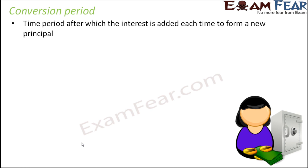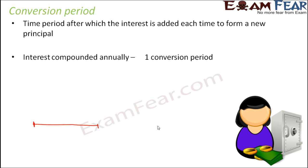Since in the last example we considered that the money was compounded annually, that time period was one year. That is, after every one year your principal amount was changing. For one year your principal amount will remain the same; after one year your principal amount will change — meaning the principal amount will become the amount of the first year. Again, after one more year the principal amount will change. So that period is called conversion period. When we say the interest is compounded annually, that means there is one conversion period of one year.